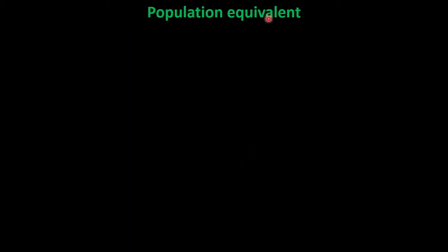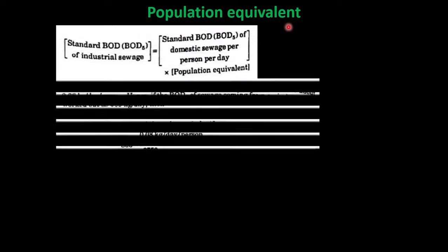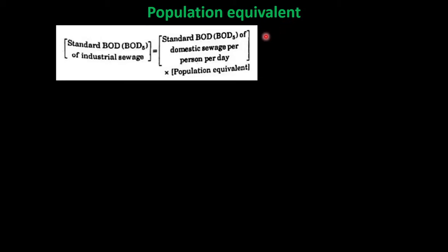Population equivalent: industrial wastewaters are generally compared with per capita normal domestic wastewater, so as to rationally charge industries for the pollution caused by them. The strength of industrial sewage is calculated using the equation: standard BOD of industrial sewage equals standard BOD of domestic sewage per person per day multiplied by the population equivalent.